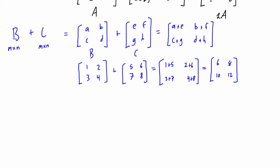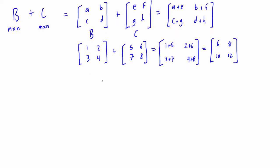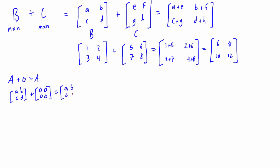There are a few important comments about matrix addition. First, the zero matrix: if we have a matrix A plus the zero matrix, that equals A. For example, with a 2 by 2 matrix with elements A, B, C, D, adding the zero matrix — which is 0, 0, 0, 0 and must be the exact same size — still gives us A, B, C, D. It's an important property of matrices.